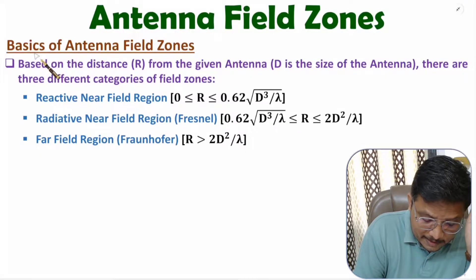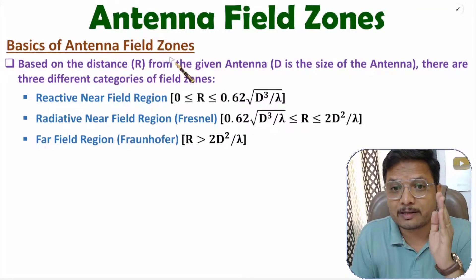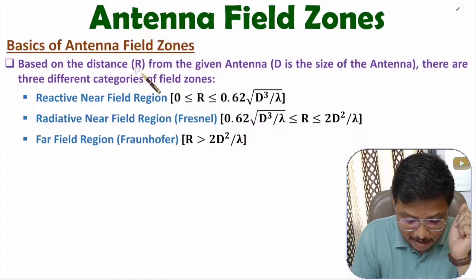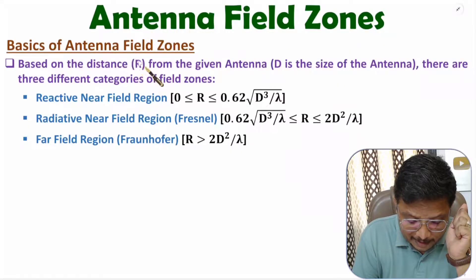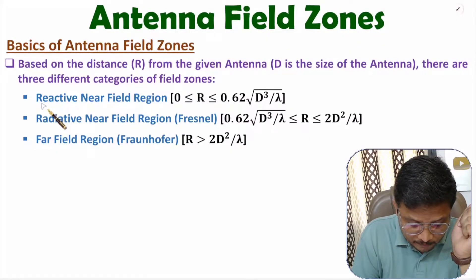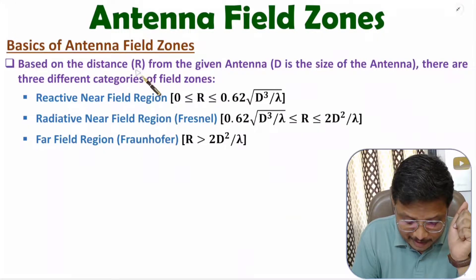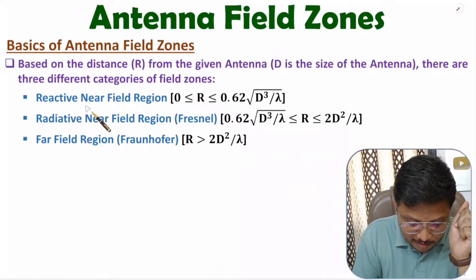Antenna field zones are defined based on distance from the antenna. If distance from the antenna is r and size of antenna is d, then in general there are three field zones: first is reactive near field region, second is radiative near field region, and third is far field region. If distance is from 0 to 0.62 times the square root of d³/λ, then the region is reactive near field region.